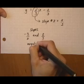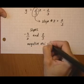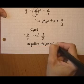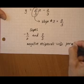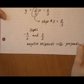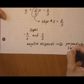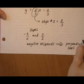Negative reciprocal, therefore they are perpendicular lines. And that would be our answer.